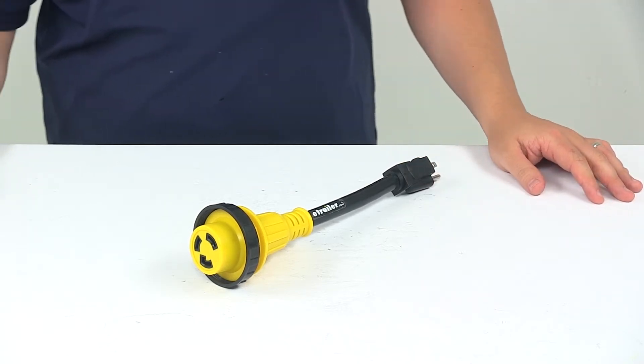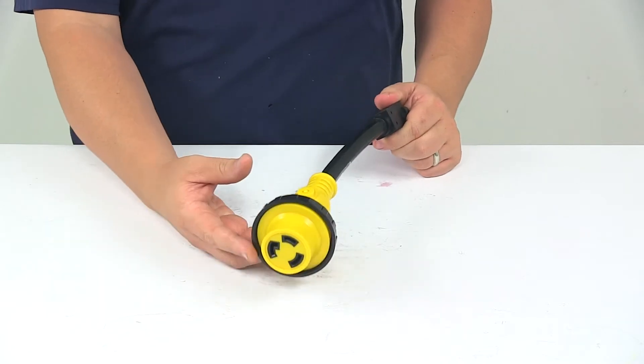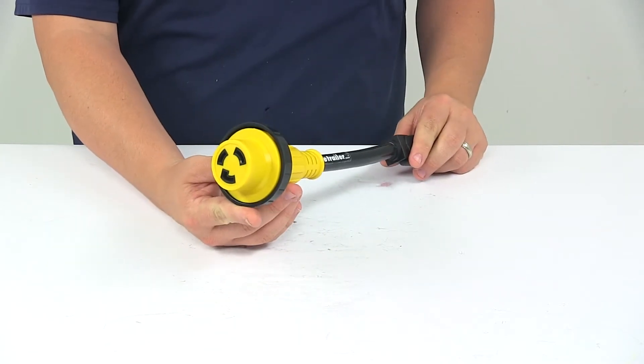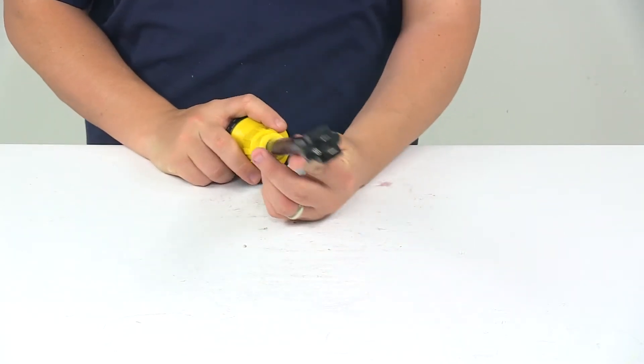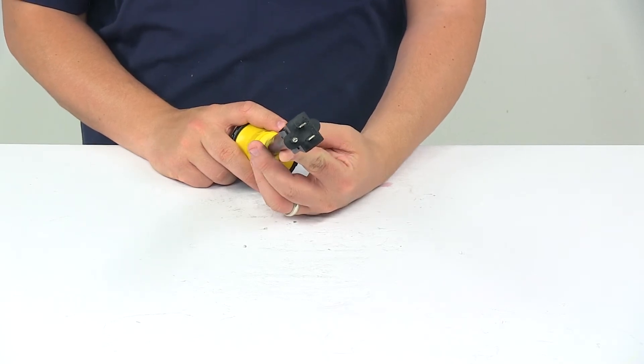Today we're taking a look at the MightyCord RV power cord adapter. This power cord adapter lets you convert your RV's 30 amp power plug to work with a 15 amp electrical hookup at home or at an RV park.